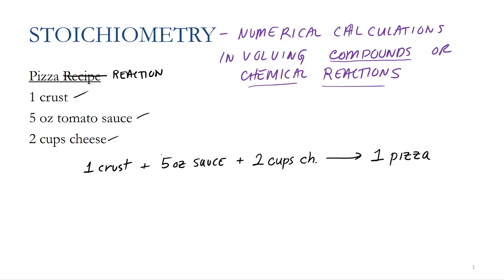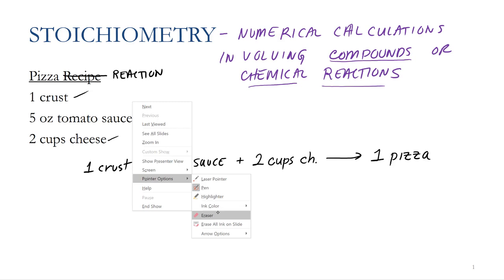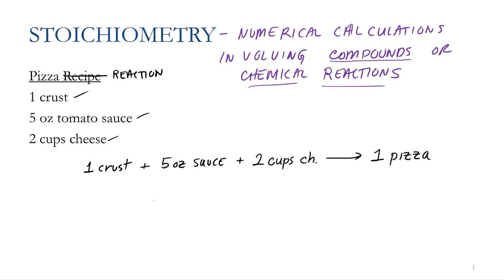We could ask a lot of questions about this pizza equation. For example: if I want to make three pizzas, how much sauce do I need? You can look at the ratios — for every one pizza I want, I need five ounces of sauce. So if I need three pizzas, that's 15 ounces of sauce. What we're really doing is a conversion, using the relationship between the amount of sauce and the amount of pizza.